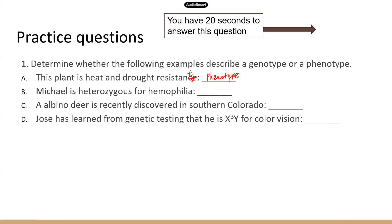Next: 'Michael is heterozygous for hemophilia.' Even though you don't see letters, the word heterozygous indicates what the genotype looks like — Michael has a dominant allele and a recessive allele. It tells you what the combination of alleles is for Michael for this particular gene. So this is genotype.